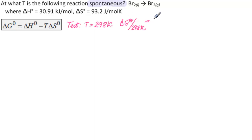It equals 30.91 kilojoules per mole minus 298 Kelvin times 93.2 joules per mole Kelvin. We see that all our units are correct. What would we get? Let's move this into joules, so this is 30,910.